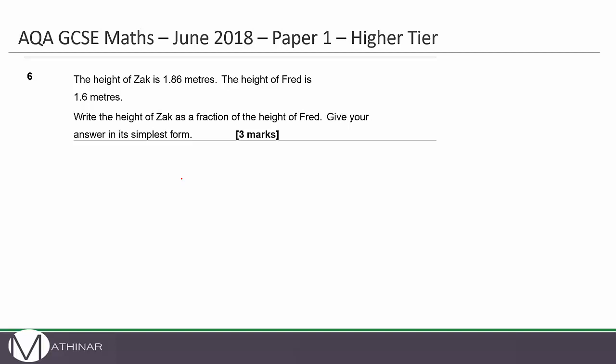The height of Zack is 1.86 meters. The height of Fred is 1.6 meters. Write the height of Zack as a fraction of the height of Fred. Give your answer in its simplest form. So we've got Zack, which is 1.86, and we've got Fred, who is 1.6.